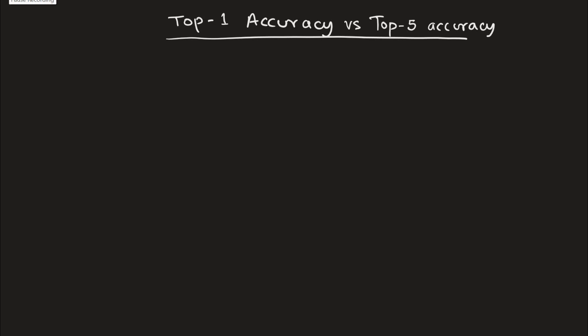Today we are going to discuss what is the difference between top-1 accuracy and top-5 accuracy. So suppose we have a deep learning model which takes in an image and gives us a classification whether our model belongs to one of these 10 classes.